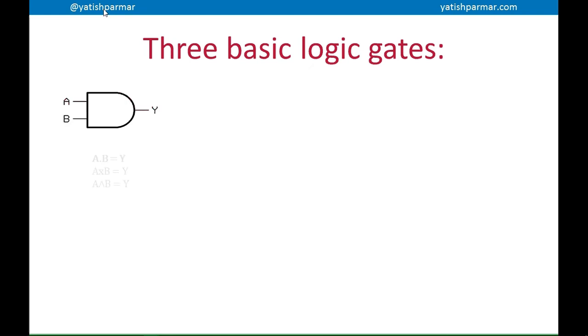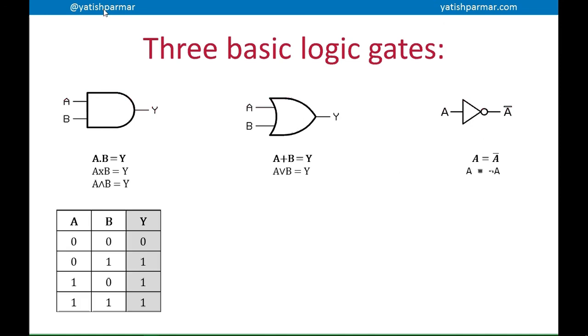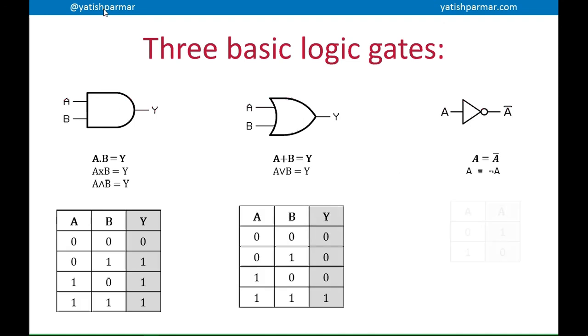So remember there are three basic logic gates: the AND gate, the OR gate, and the NOT gate. Underneath, I've got three different ways of writing out an expression for each of those logic gates. I'm going to be using the ones in bold. You should also be familiar with the three different truth tables for each of those basic gates.